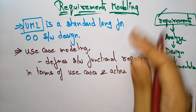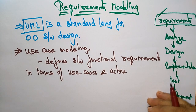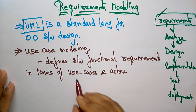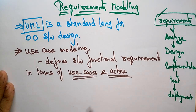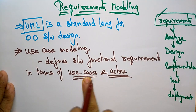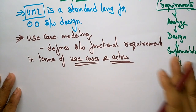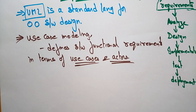To gather the functional requirements from the customer, they will be represented in terms of use cases and actors. Requirement modeling uses only use cases and actors to show the requirements in diagrammatic representation. Now let us see the UML notation for the use case diagram.